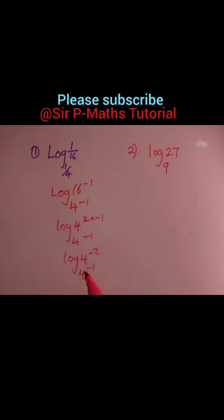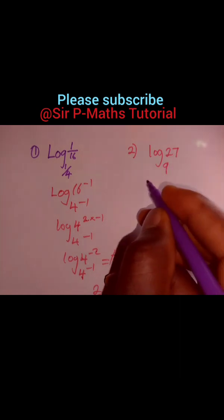Now the log and base are the same, so write -2 over -1 as a fraction. Minus cancels minus, my answer is 2. For the second one, I will have log base 3^2 of 3^3. The log and base are the same.